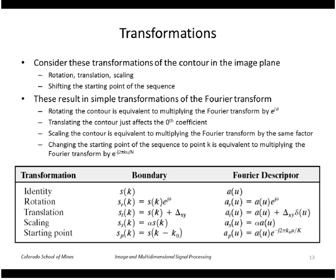So all of these result in simple transformations of the Fourier descriptors. First of all, rotation of the contour is equivalent to multiplying the Fourier transform by e^(jθ). Translating the contour just affects the zero coefficient,